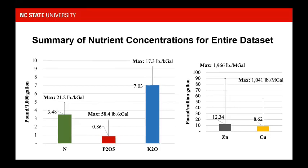Moving on to nutrient concentrations, we analyzed nitrogen, phosphorus, potassium, zinc, and copper. The bars show mean concentrations with error bars and maximum values. Nitrogen ranged from 3.5 to 21 — about six or seven times variability. Potassium, from 7 to 17, was a little more than two times. Since we're already applying at nitrogen rates, nitrogen concentration is less of a concern. Our attention turns to phosphorus, zinc, and copper, which are bound in solid form and found in the sludge.